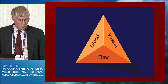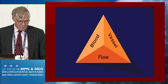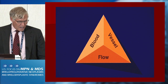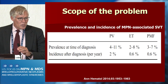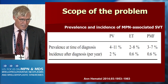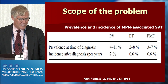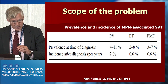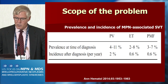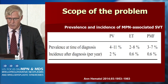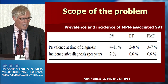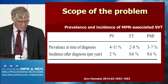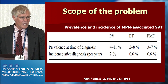We're going to try to consider splanchnic vein thrombosis from this perspective, because frankly there aren't many data otherwise available to help us understand it. The scope of the problem is something we're familiar with. It's most commonly associated with polycythemia vera, but also essential thrombocytosis and primary myelofibrosis. A significant number of splanchnic vein thromboses occur prior to the diagnosis.